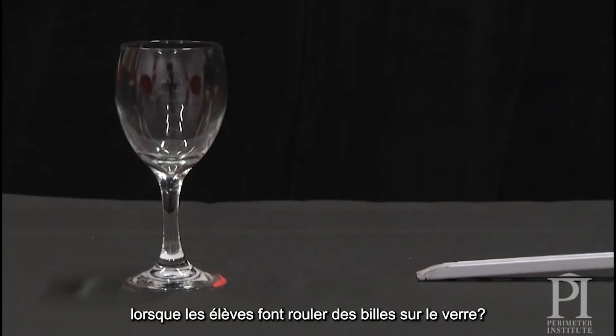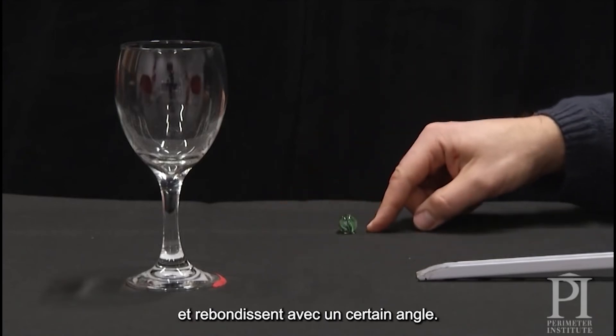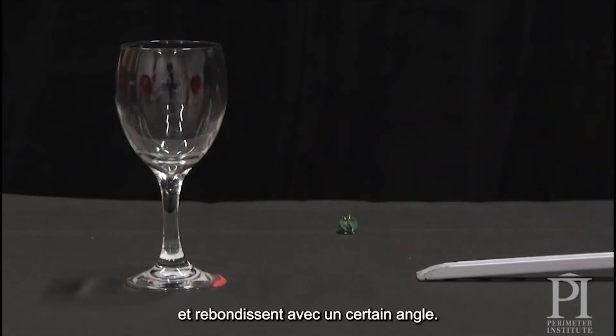What happens when the students fire the marbles at it? Well, they roll up and then they're repelled by the glass. And they come off at some kind of angle.